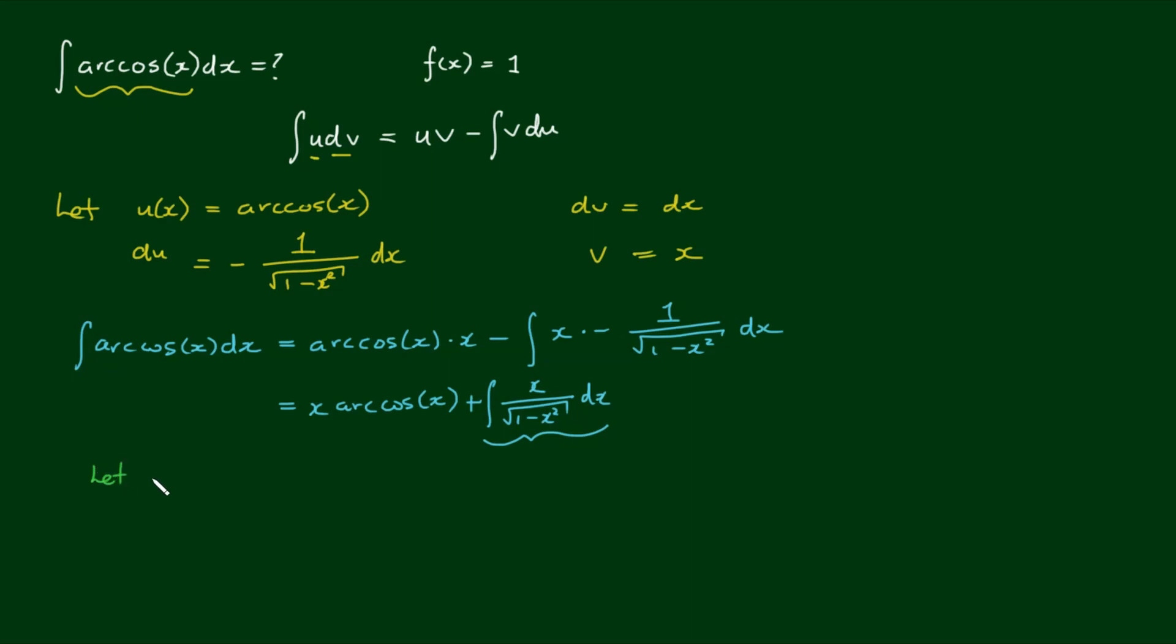Let's let w equal 1 minus x squared. Then the derivative of w, so dw/dx equals negative 2x. Bring down the power minus 1 from the power, and we write this as dw equals negative 2x dx. That implies that x dx equals negative 1 half dw.